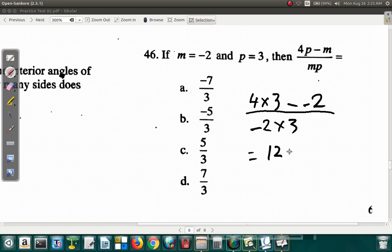4 times 3 is 12 minus negative 2 over negative 2 by 3 is negative 6. 12 minus negative 2 is same as 12 plus 2. So 12 and 2, that's going to be 14 over 6. 14 sixth is the same as 2 in 14 is 7, 2 in 6 is 3. 7 thirds.